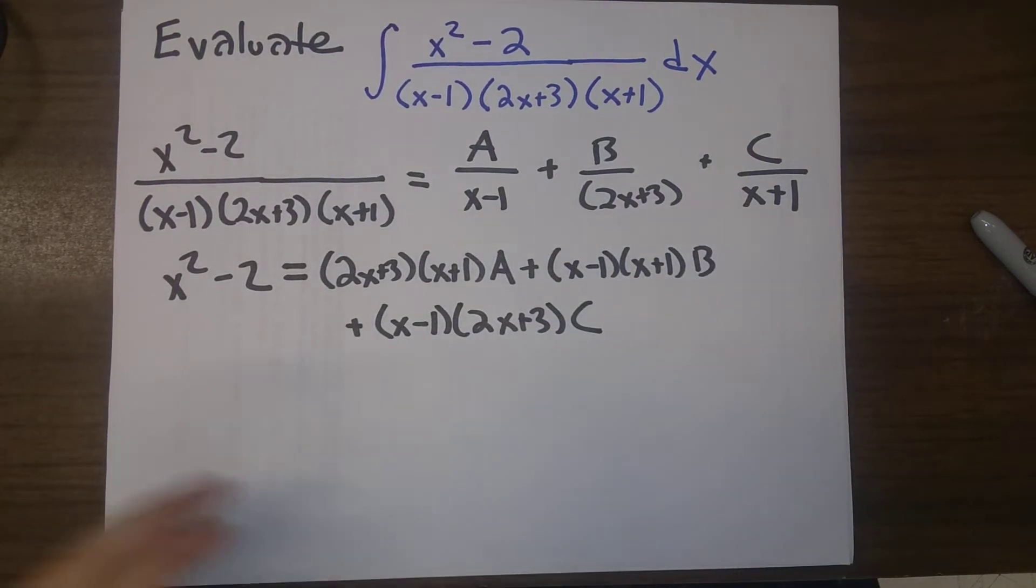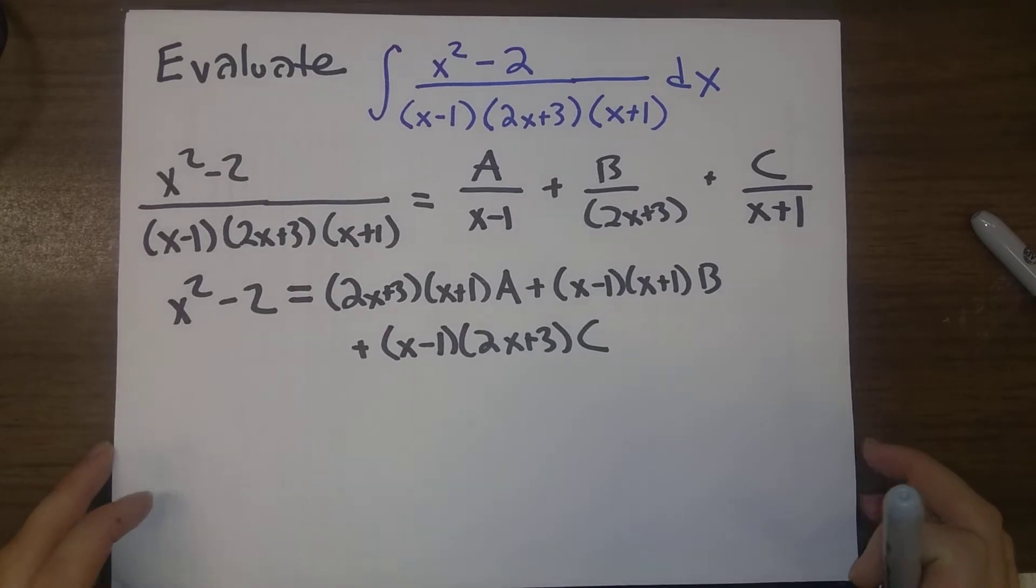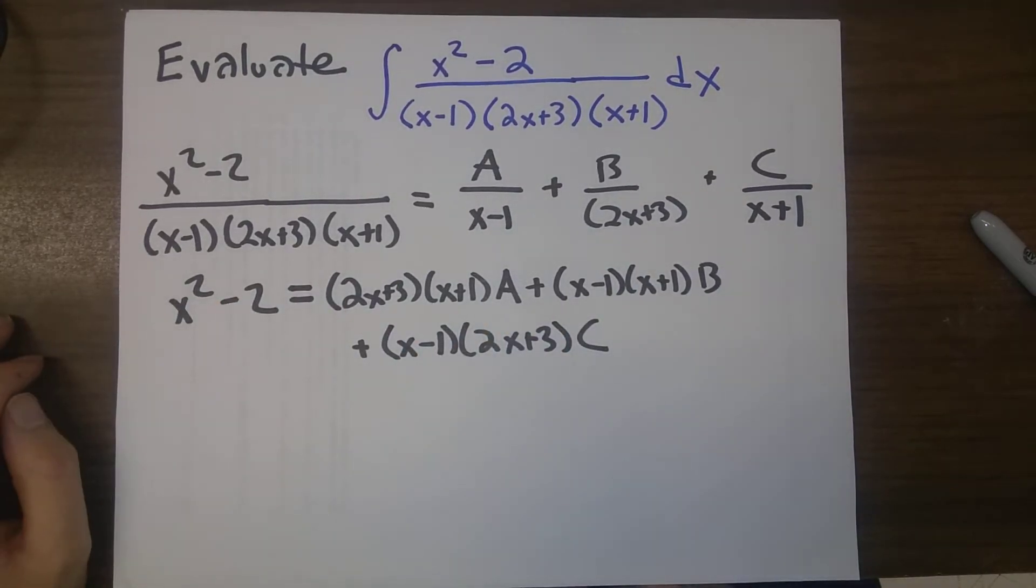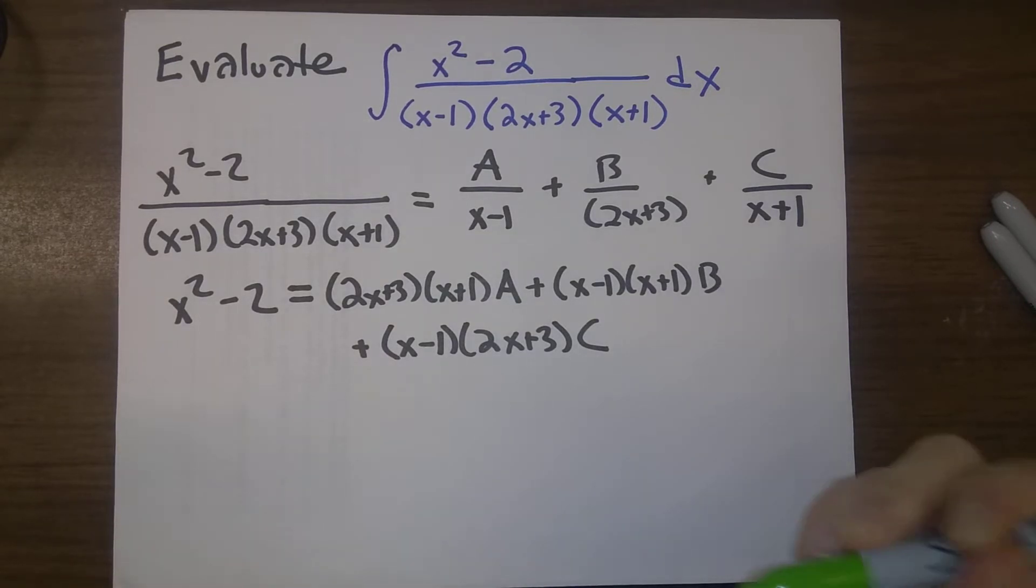Okay, so once again, same thing as before, this equation here has to be true for all values of x. We're allowed to plug in any values of x that we want to, and then this will allow us to figure out what are A, B, and C. Same thing as before. I think the easiest way to attack this is by substituting in appropriate values of x.